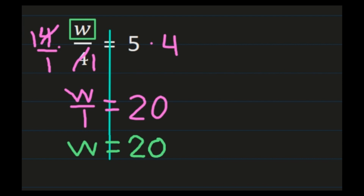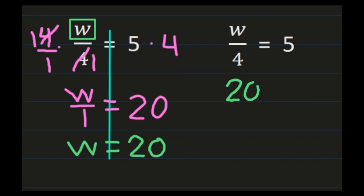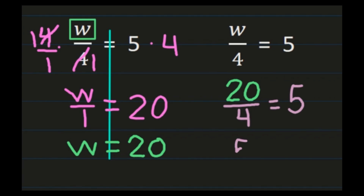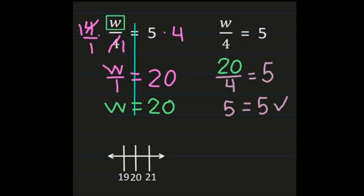We can check this problem as well. Going back to w over 4 equals 5, we found w equals 20, so we substitute 20 for w. We check whether 20 over 4 really equals 5. Since 20 divided by 4 is 5, we get 5 equals 5 — our solution of w equals 20 is correct. And if you need to graph the solution, w can only be 20, so you place a closed circle on 20.